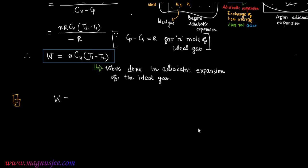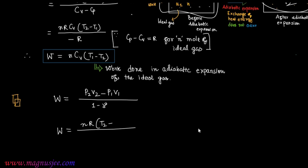We can now write the three expressions for work done in adiabatic expansion of the ideal gas: W = (P2V2 − P1V1)/(1−γ), W = nR(T2−T1)/(1−γ), and W = nCv(T1−T2).